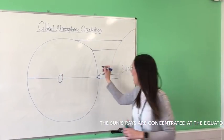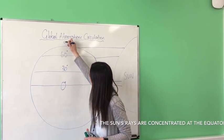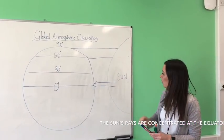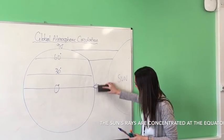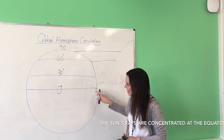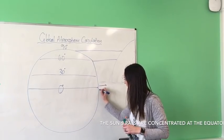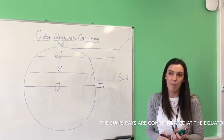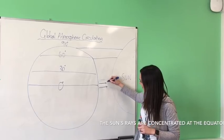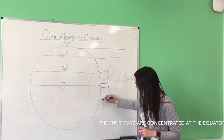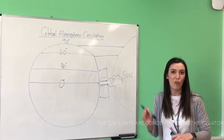Starting at zero degrees at the equator, lines of latitude go to 30, then 60 - roughly where the UK is - and then 90 at the North Pole. The Sun's energy is really intense at the equator, so the Earth's surface heats up rapidly. As it heats up, the air above starts to rise - warm air always rises - and then it cools, condenses, and moves out towards 30 degrees north and south.